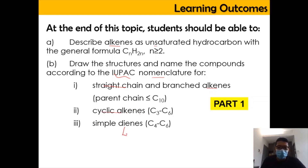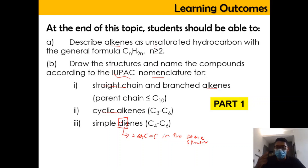Diene refers to a structure that has two carbon-carbon double bonds. That is why the name is diene — 'di' meaning two.